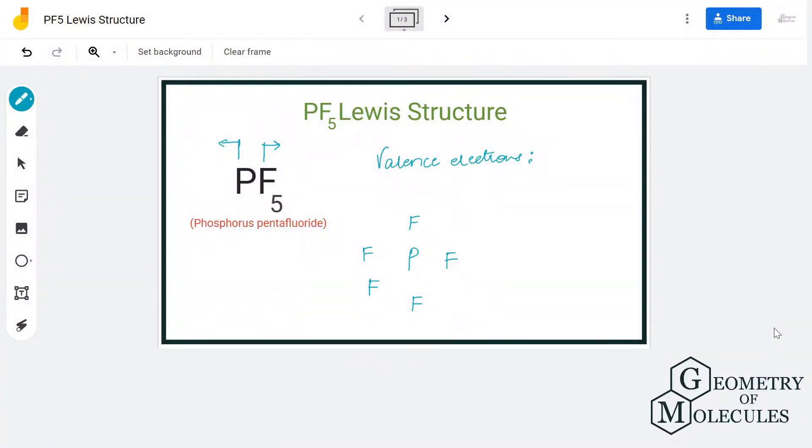Hi guys, today we are going to determine the Lewis structure for PF5, the chemical formula for phosphorus pentafluoride. This molecule is made up of five atoms of fluorine and one atom of phosphorus.